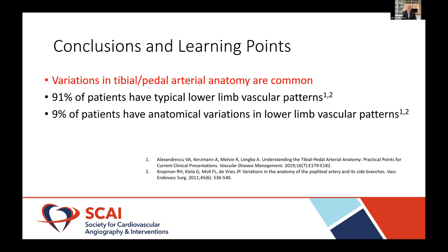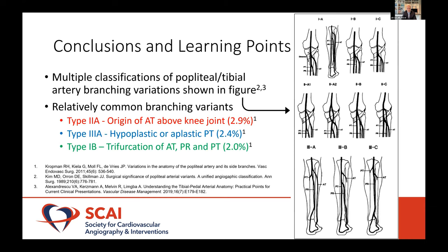In summary, these variations are common — about 91% of patients have the normal vascular pattern, while 9% have these variations. Here's the Kim classification figure. The upper left corner shows the normal anatomy — type 1A is normal. You can see the type 2A with that high takeoff of the AT, with two variations. This is important not only for interventionalists but also orthopedic surgeons doing knee surgeries, who can encounter and accidentally ligate that anterior tibial artery.